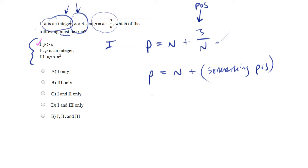So I'm going to pick 6. And let's say P is equal to 6 plus 3 over 6, which is equal to 6 plus 1 half, which is equal to 6.5. So P is equal to a decimal. That's not an integer. And statement 2 is wrong.